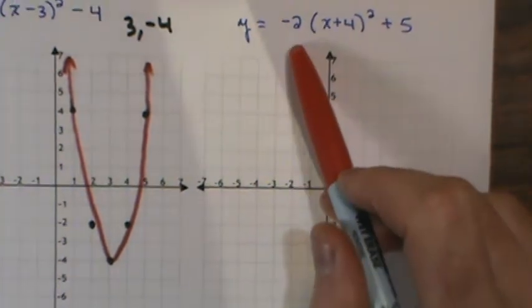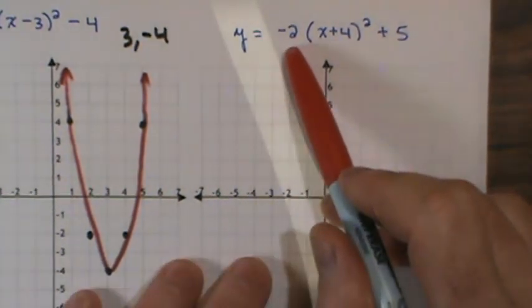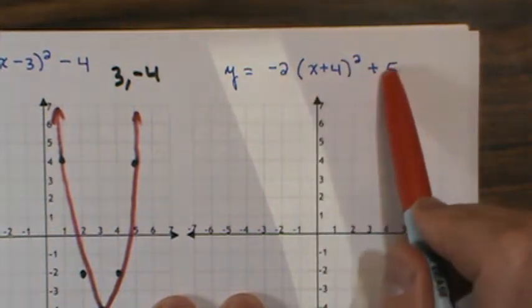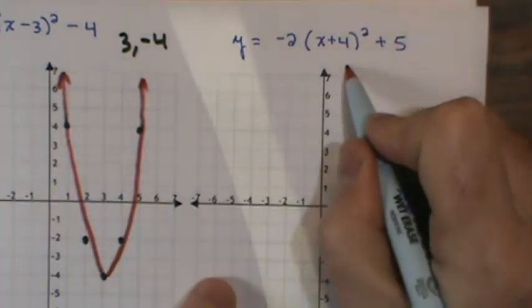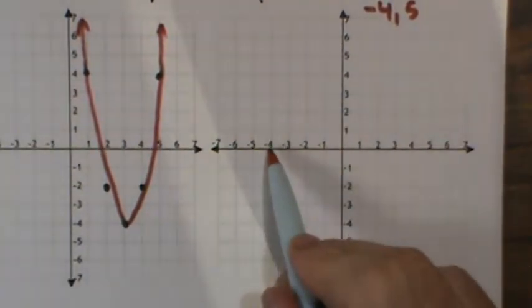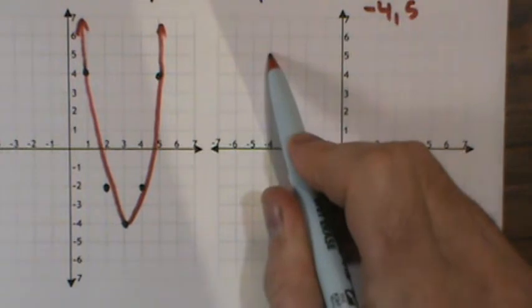For this second example, I've got y equal negative 2 quantity x plus 4 squared plus 5. So my vertex would be at negative 4, 5. I locate negative 4, I go up to 5.